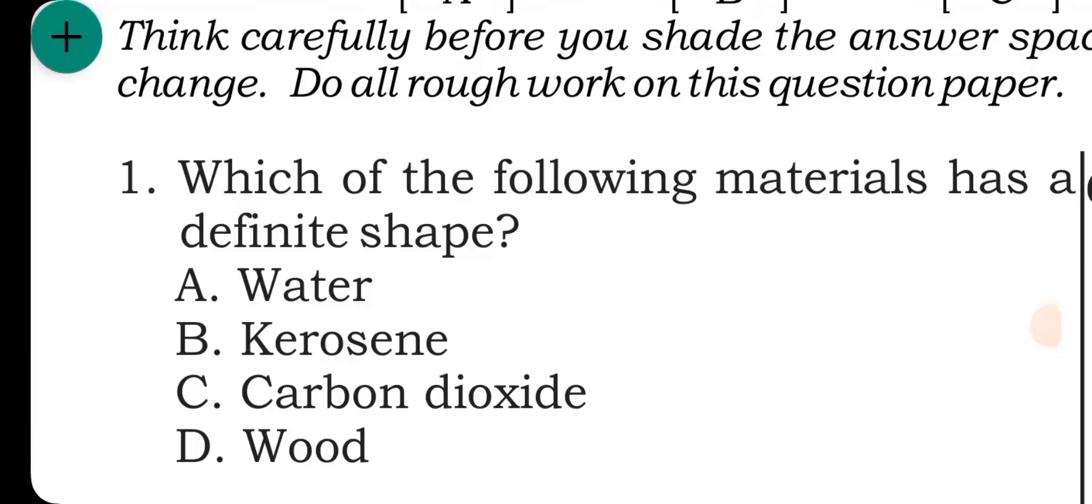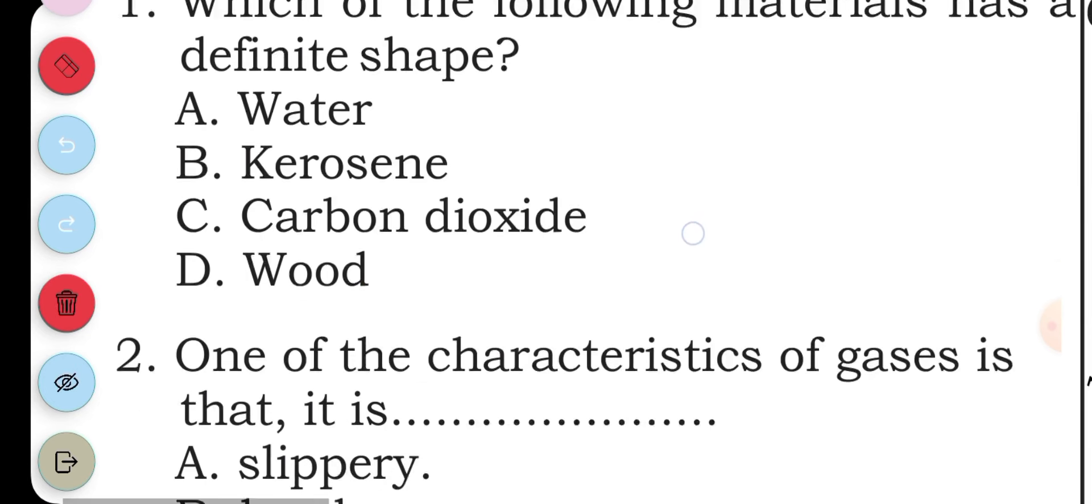Question one: which of the following materials has a definite shape? A water, B kerosene, C carbon dioxide, D wood. The answer is D, wood. Question two: